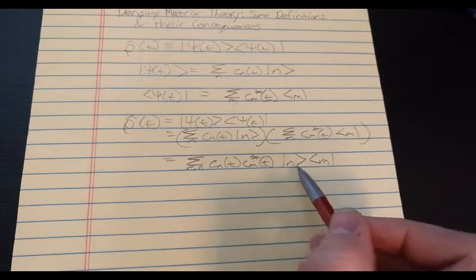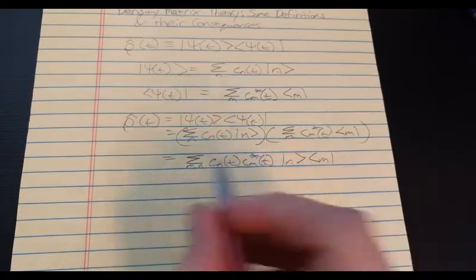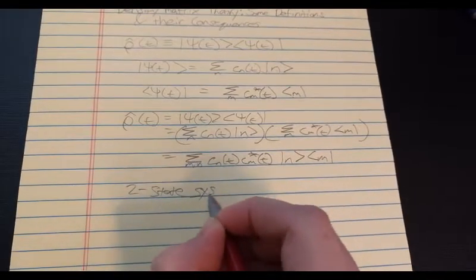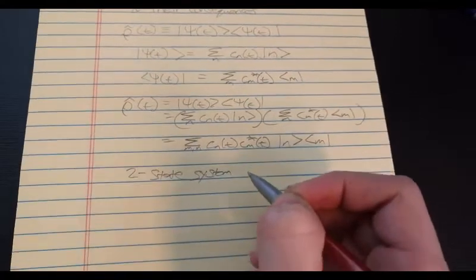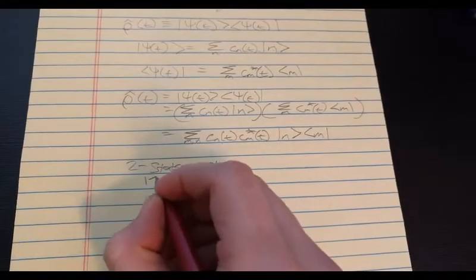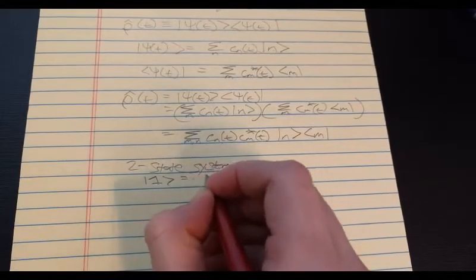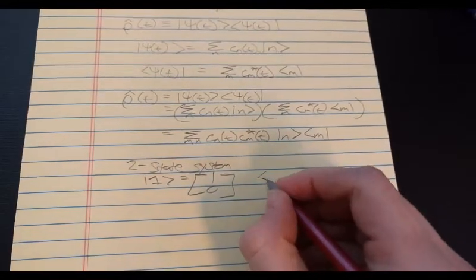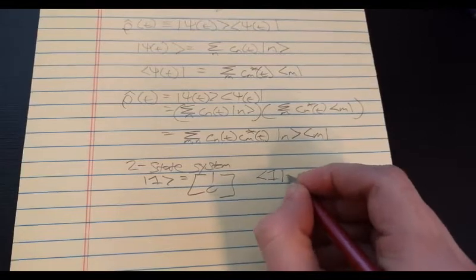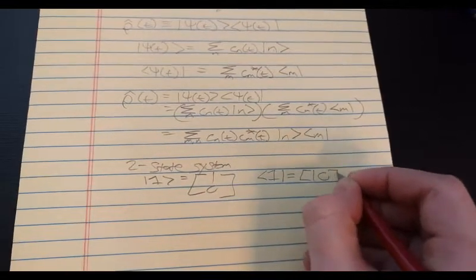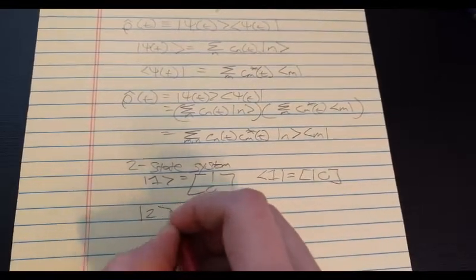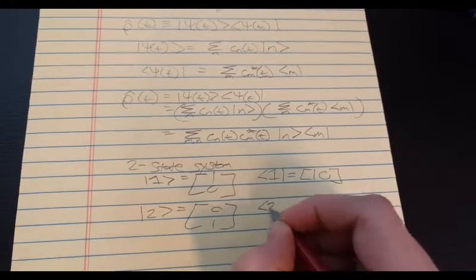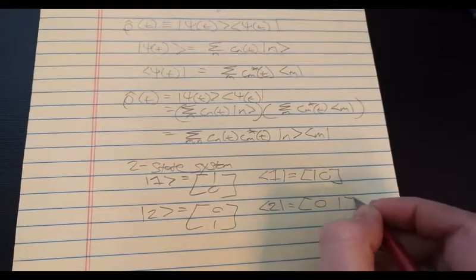So let's try to imagine this concretely. Let's take a two state system where we have two basis states, basis state one which is equal to one zero and we can write the bra of one as the row vector and basis state two which is zero one and the bra of state two, zero one.